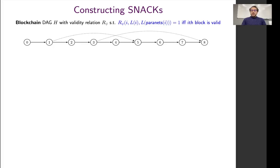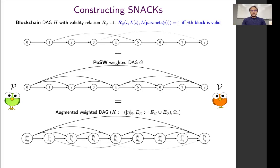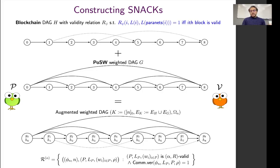In one slide, our construction assumes we have a blockchain — specifically its underlying graph, which has a simple path but may have additional edges. Given the underlying graph of a proof-of-sequential work scheme, we show how to intertwine the computation of the blockchain proof and the proof-of-sequential work scheme by absorbing the blockchain computation into that of the proof-of-sequential work scheme, deriving guarantees on the blockchain from the sequential guarantees. In picture: you have two graphs, you define one augmented graph, and we show how to label it and utilize the verifier of the proof-of-sequential work scheme to build a verifier for the Snack — succinct non-interactive argument of chain knowledge.